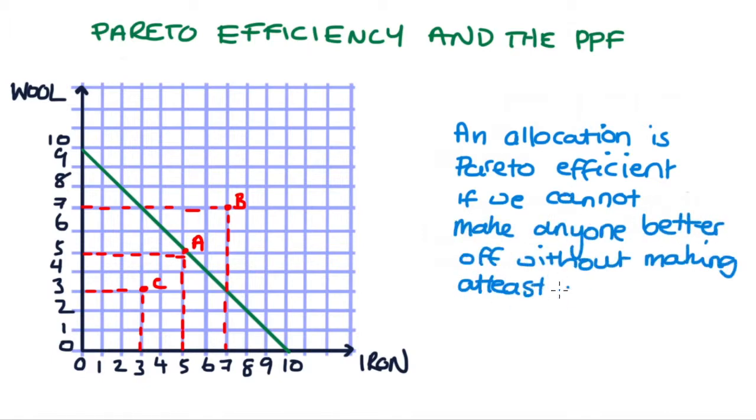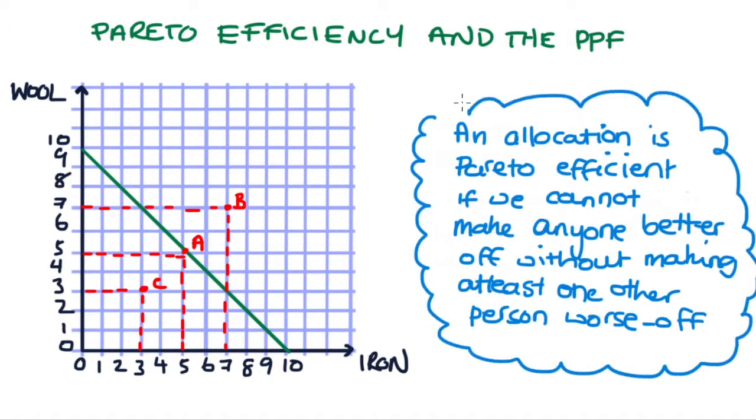So I've got a definition here and I'll read it out. An allocation is Pareto efficient if we can't make anyone better off without making at least one other person worse off.